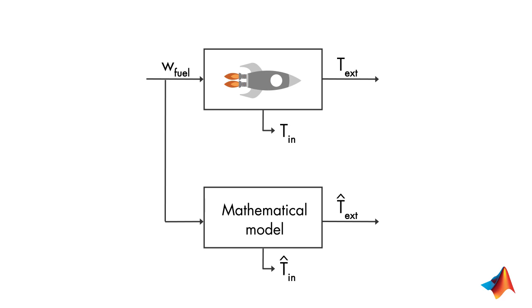Let's see how a state estimator works. Here, our goal is to match the estimated external temperature with the measured external temperature. We know that if these two are equal, then the model will converge to the real system. So, the estimated internal temperature will converge to its true value.